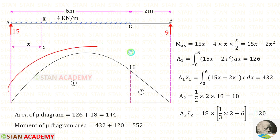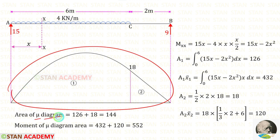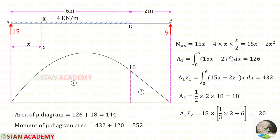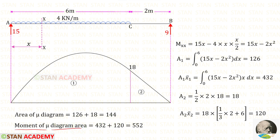We know that this bending moment diagram is called the mu diagram. To find the area of the mu diagram we add both parts: area 1 + area 2 = 144. Now let us find the moment of the mu diagram area about A. Adding area 1·x̄₁ and area 2·x̄₂ gives us 552.